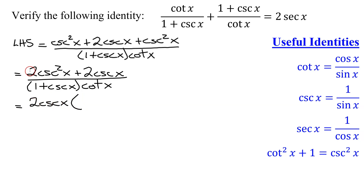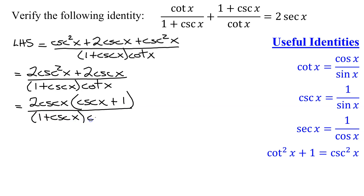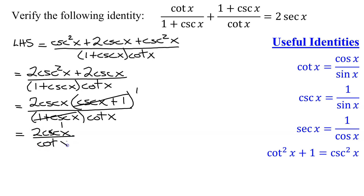Pulling 2 cosecant x out of 2 cosecant squared x leaves cosecant x, and pulling 2 cosecant x out of 2 cosecant x leaves the placeholder 1. So the numerator becomes 2 cosecant x times the quantity cosecant x plus 1, all divided by 1 plus cosecant x times cotangent x. Since addition order doesn't matter, cosecant x plus 1 is the same as 1 plus cosecant x, so those reduce, leaving 2 times cosecant of x divided by cotangent of x.